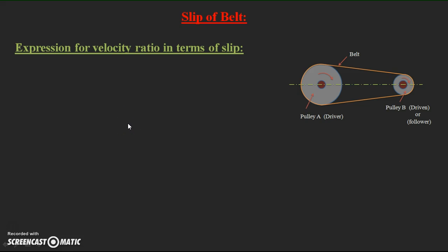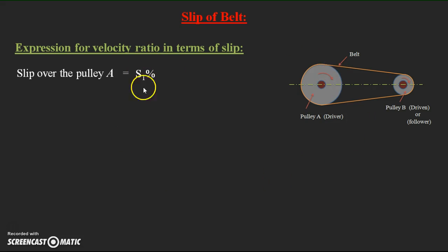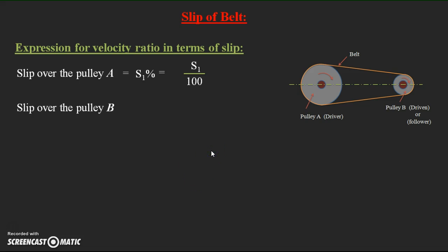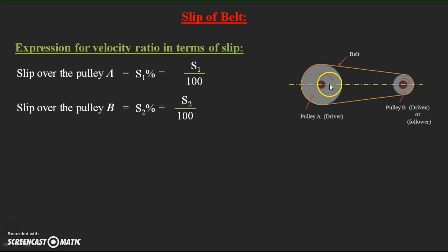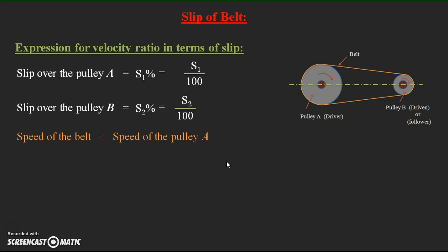In theoretical analysis, slip values are given as a percentage. Assume slip over the driver pulley A is s1 percent, which can be written as s1/100. Similarly, slip over the driven pulley B is s2 percent, written as s2/100. When analyzing slip for pulley A, the belt does not move with the pulley, so the speed of the belt becomes less than the speed of the pulley — that is, the belt speed is less than the pulley speed due to slip.